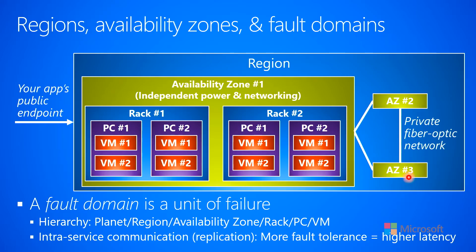These availability zones within the region are typically connected to each other using a private fiber optic network — private meaning specific to the cloud provider, and fiber optic meaning it's blazingly fast. So if you have some code running in one availability zone and some code or service running in another availability zone, they can communicate with each other with very high speed.